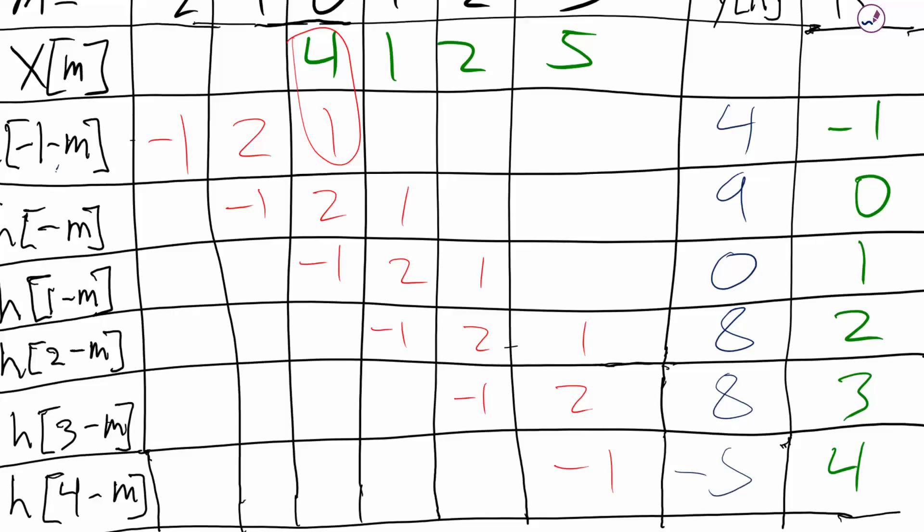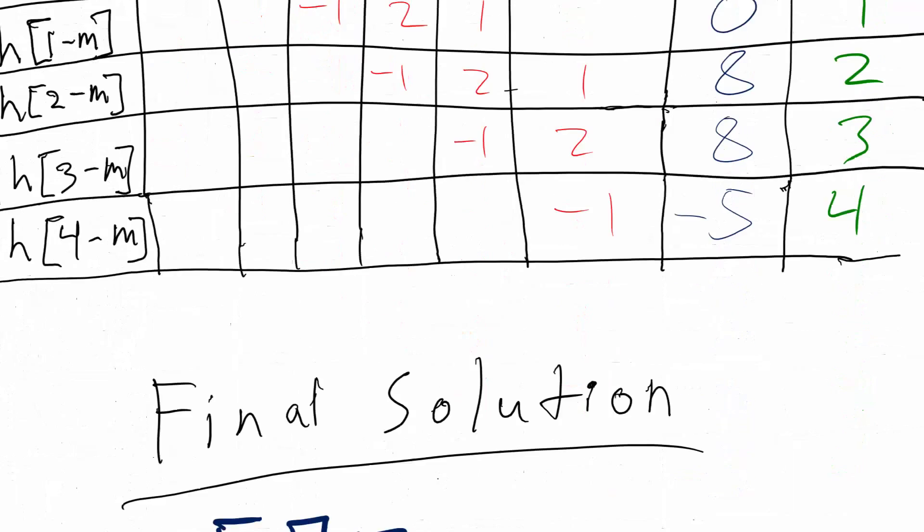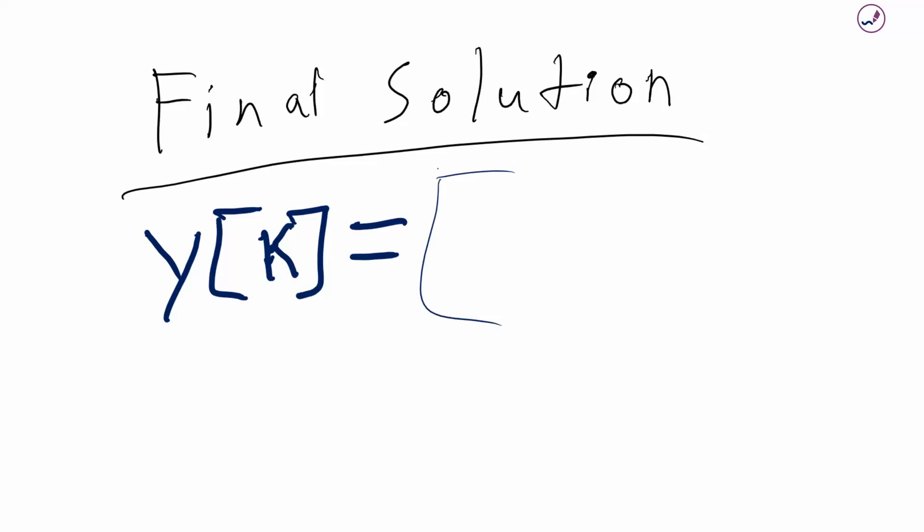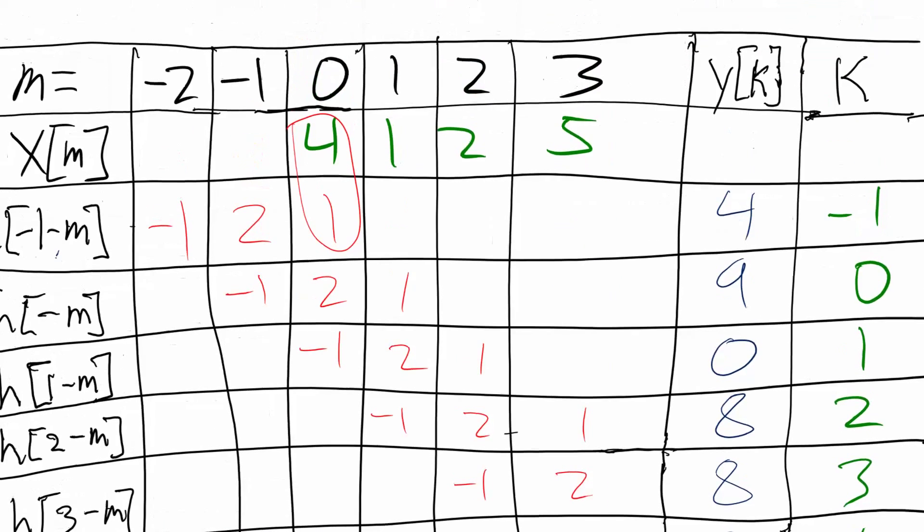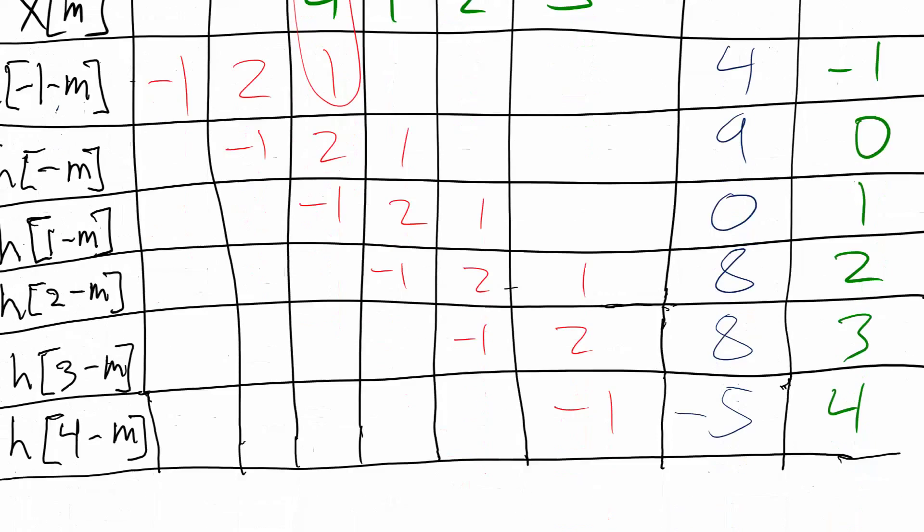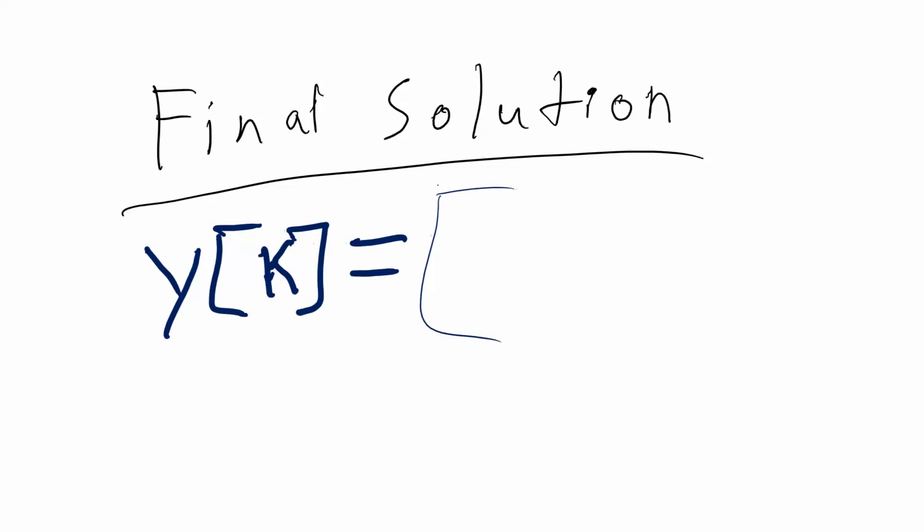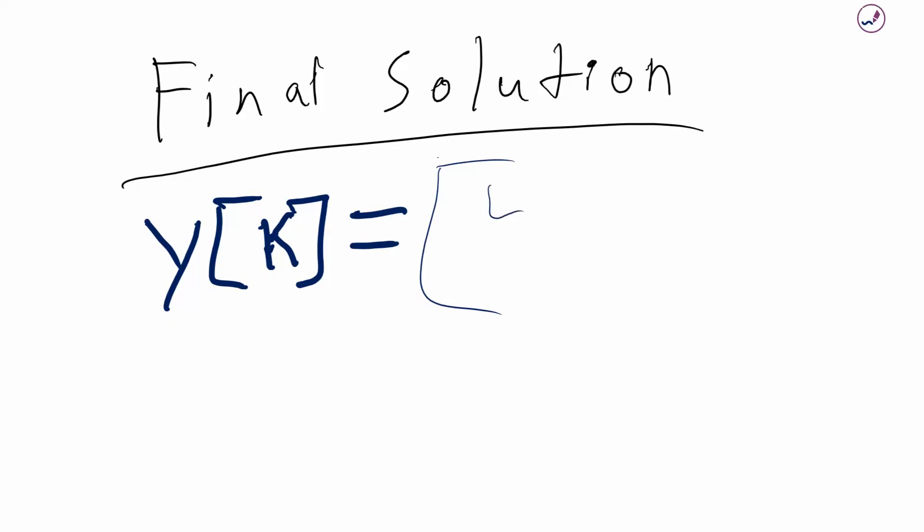So for our final solution, looking back at the table, we have 4, 9, 0, 8, 8, negative 5. So we're just going to fill this out here. 4, 9, 0, 8, 8, negative 5. And then to check ourselves, we should have 6 terms. 1, 2, 3, 4, 5, 6. And there we go. Thank you.